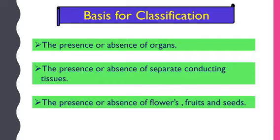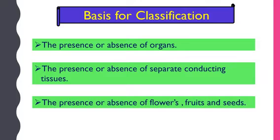The presence or absence of organs is the first criteria for classification of plants. The presence or absence of separate conducting tissues for the conduction of water and food is the next consideration. Also, depending upon the absence or presence of flowers, fruits and seeds, the plants are classified as Cryptogams and Phanerogams. Depending upon whether seeds are enclosed within a fruit or not, Phanerogams are classified as Gymnosperms and Angiosperms. Angiosperms are further classified into two classes — Dicots and Monocots — depending upon the number of cotyledons in the seed.